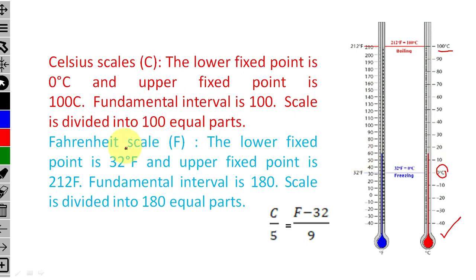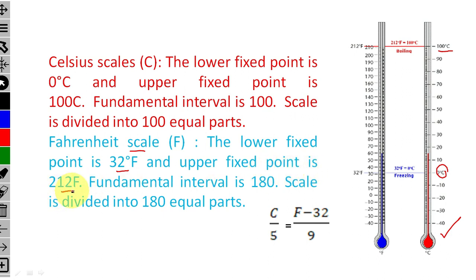Next, the Fahrenheit scale, with symbol F. The lower fixed point is 32 degrees Fahrenheit and the upper fixed point is 212 degrees Fahrenheit. The fundamental interval is 180, and the scale is divided into 180 equal parts.